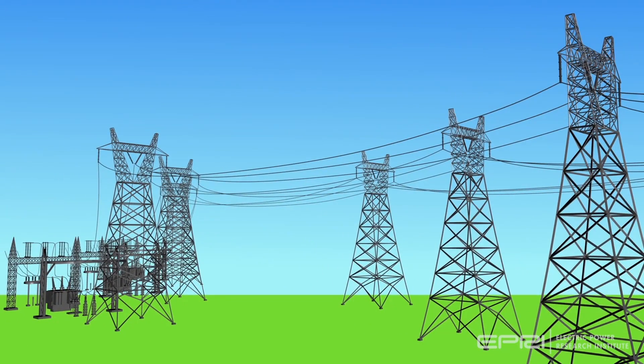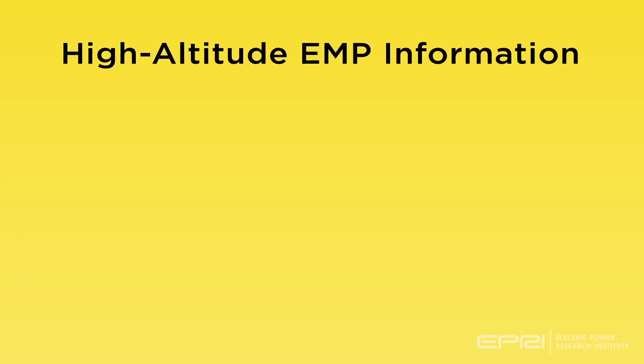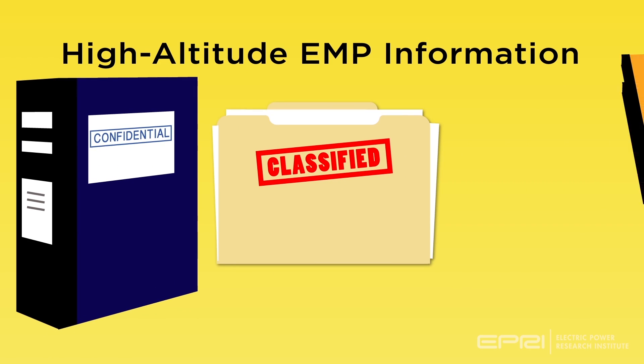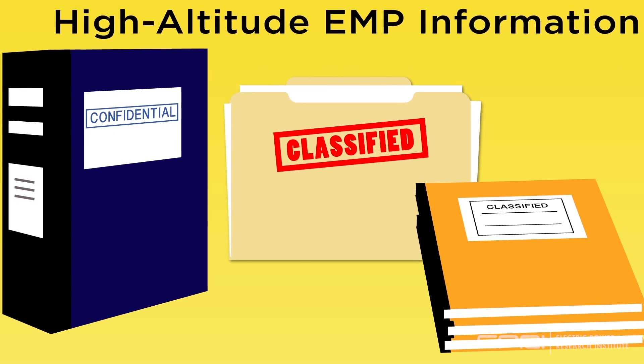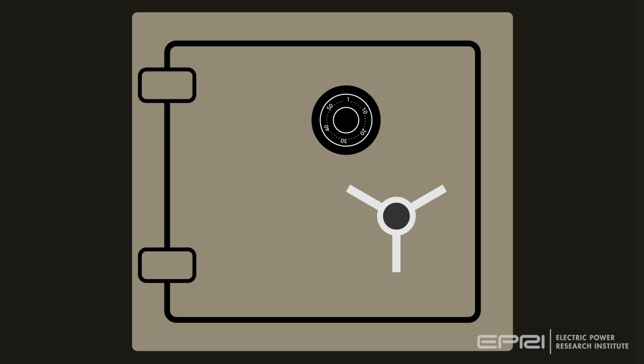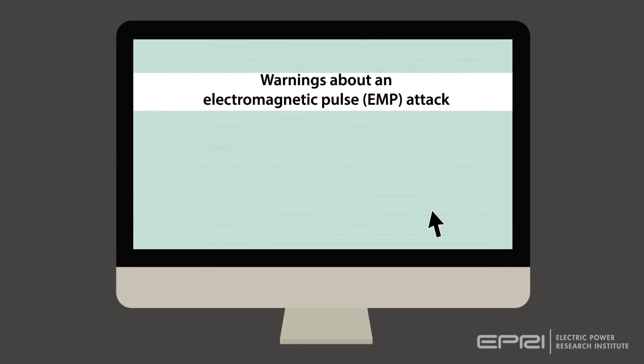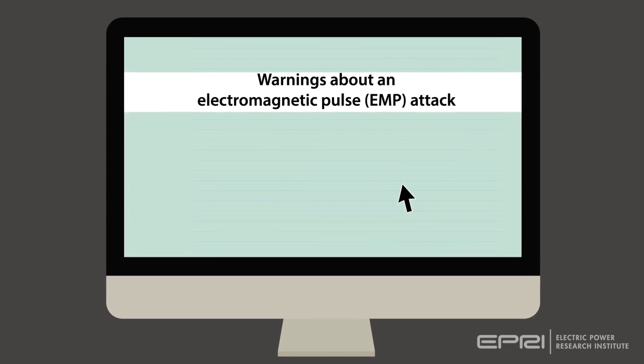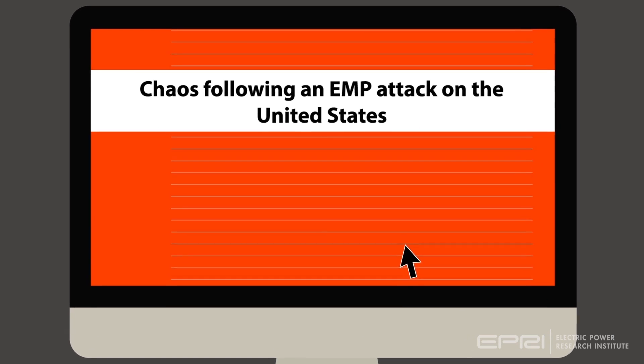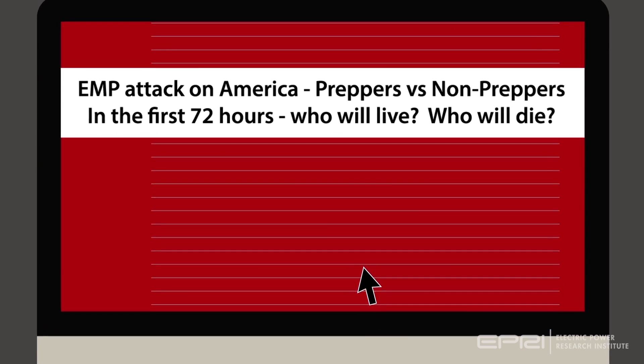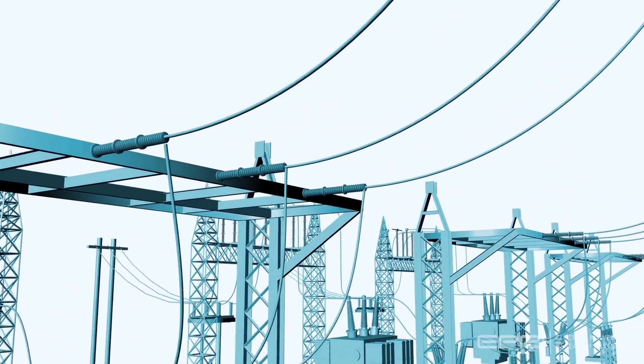Much of the information regarding the effects of high-altitude EMP on modern infrastructure or the capability of our adversaries to conduct such an attack is either classified or not easily accessible. The information that is abundantly available, especially over the Internet, is often inaccurate, based on misinformation and has the unintended consequence of undermining the validity of more serious sources.